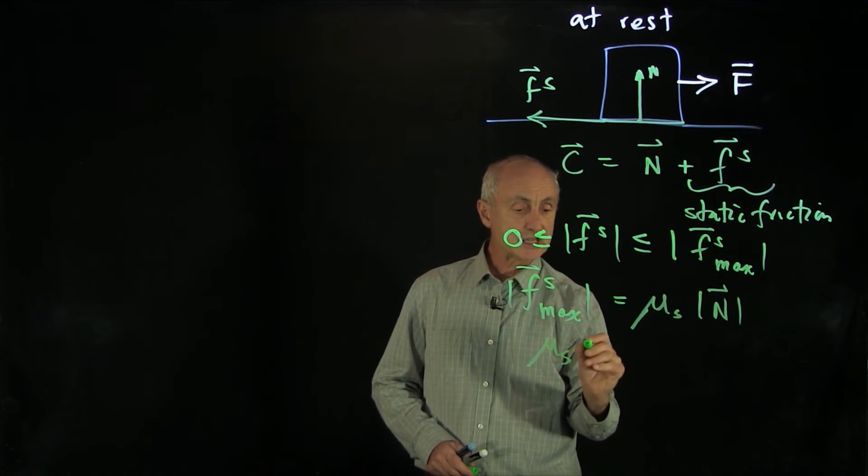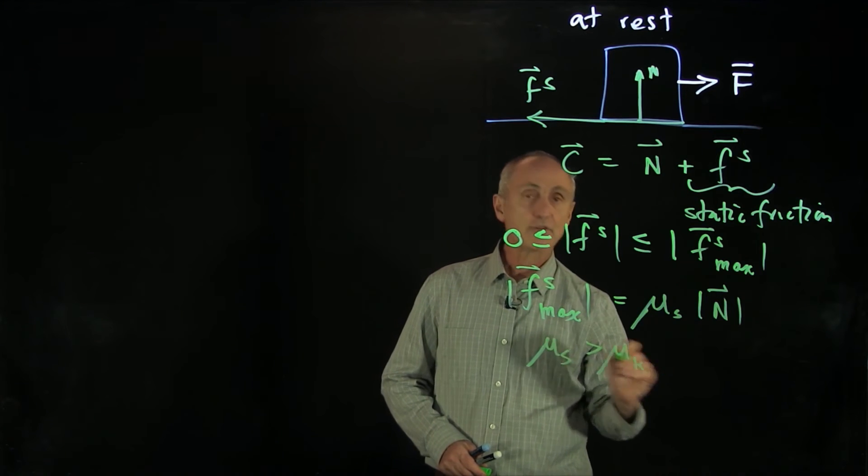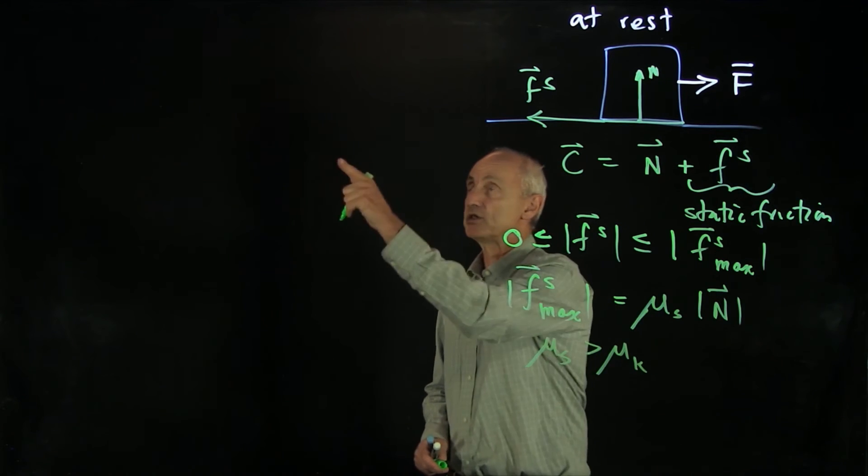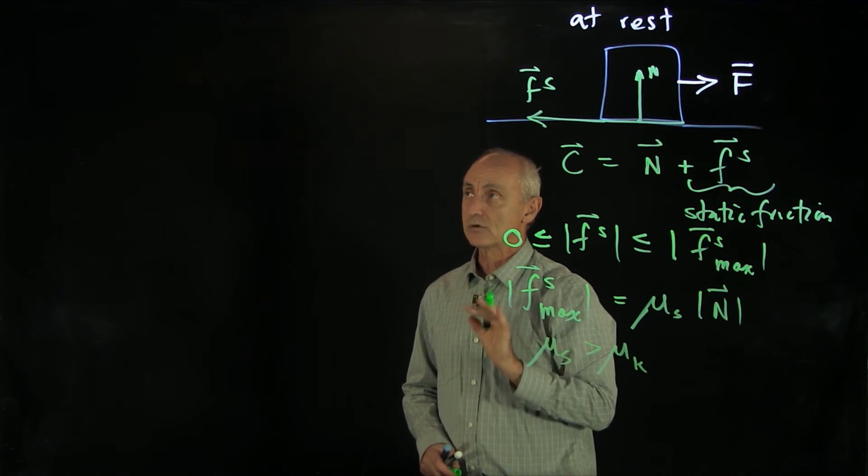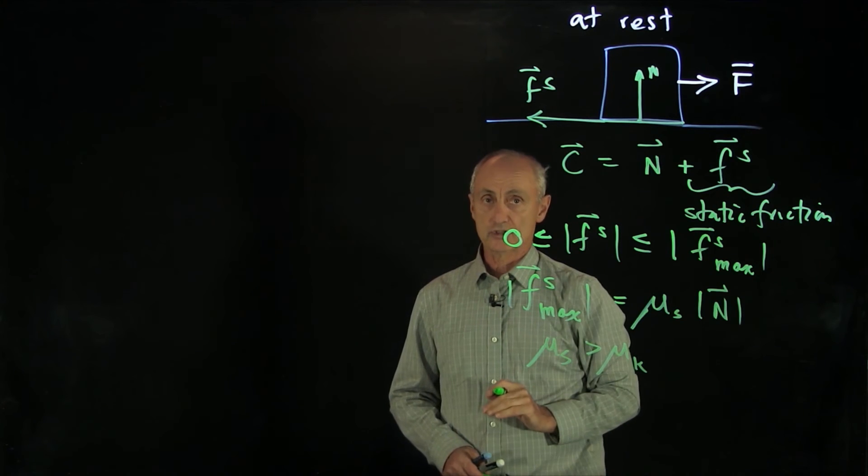And this coefficient of static friction is slightly bigger than the coefficient of kinetic friction, which explains why that arrow got a little bit smaller when it just started to slip.